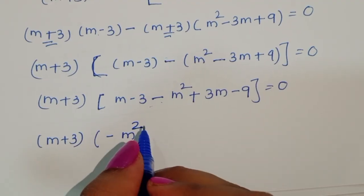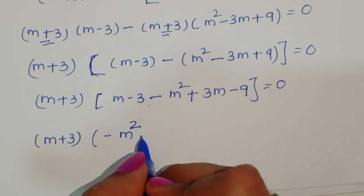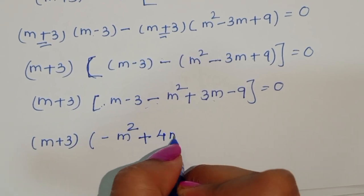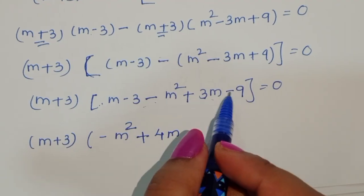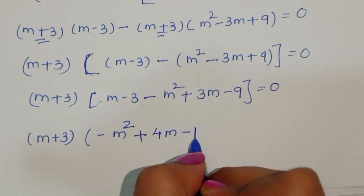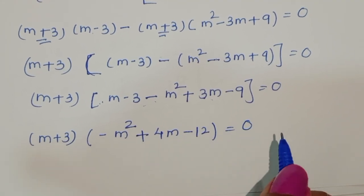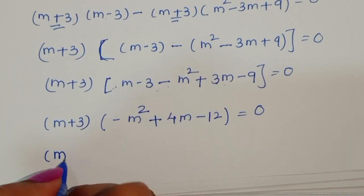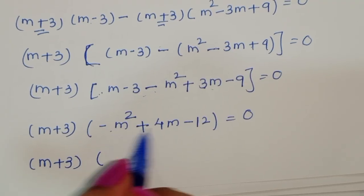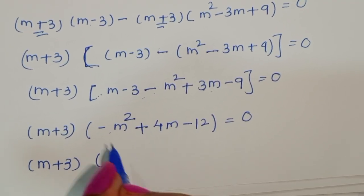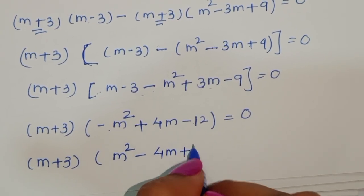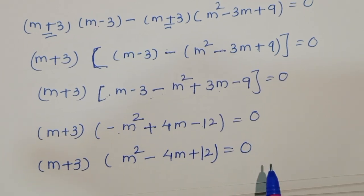Arranging the terms: minus m squared plus 3m plus m gives plus 4m, and minus 9 minus 3 gives minus 12. So we have (m plus 3) times (minus m squared plus 4m minus 12) equals 0. Multiplying through by minus one gives (m plus 3)(m squared minus 4m plus 12) equals 0.